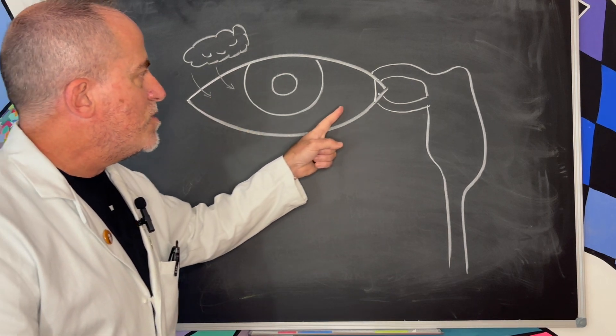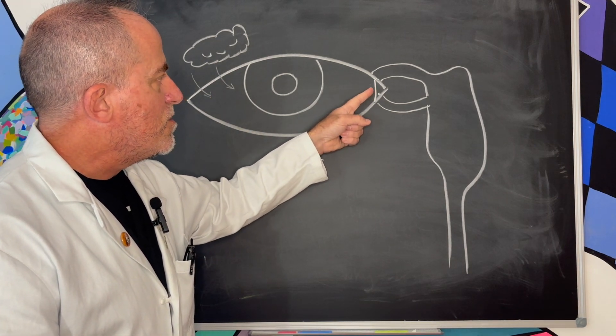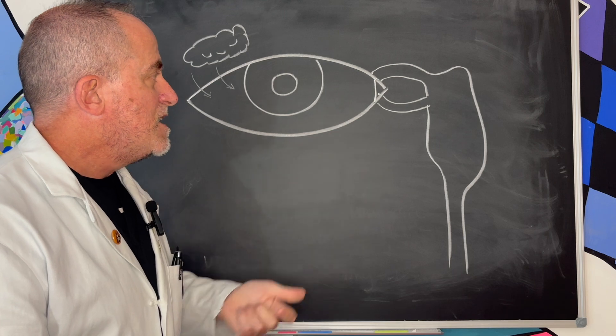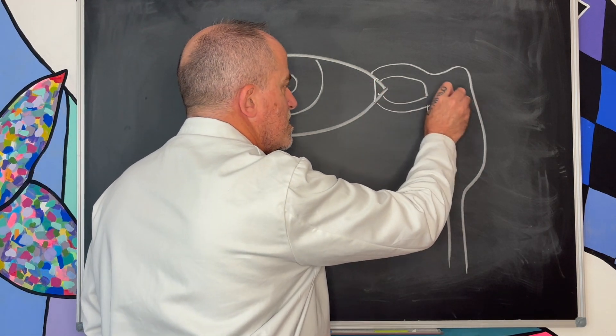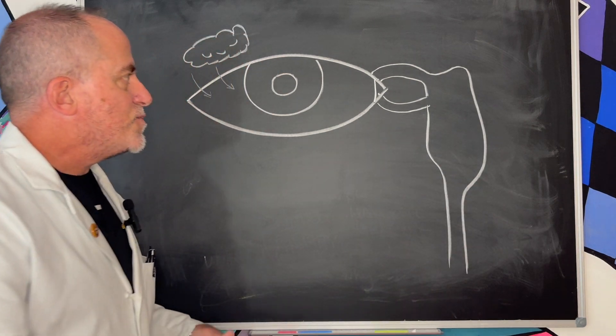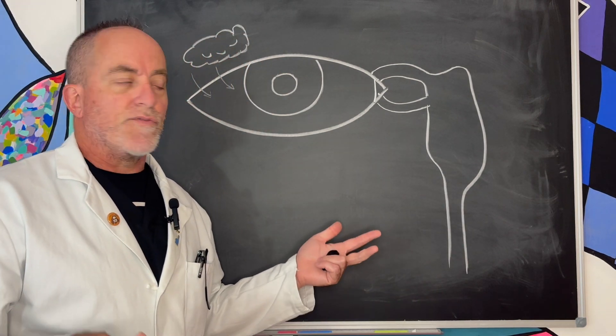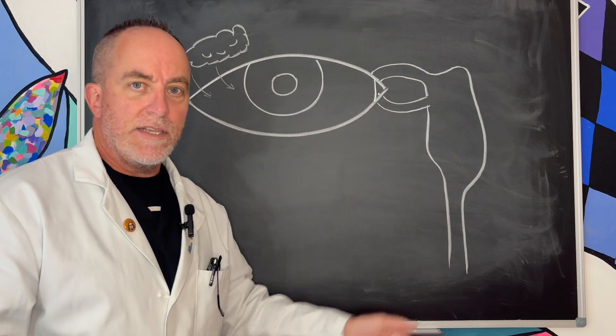The tears as they build up are supposed to go into these two little holes, the tear ducts, we call them a punctum, which is just an opening, and that goes into the tear sack and then that goes into the nose. And that's one reason when you cry, your nose runs because your tears end up going into the nose.